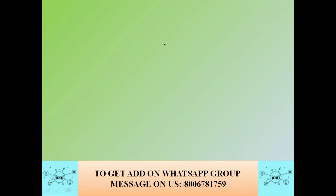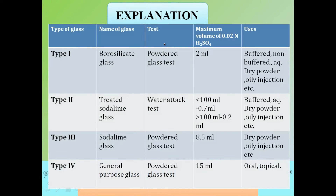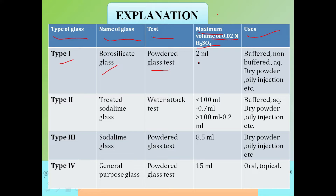Let's discuss using a table. Type 1 glass is borosilicate glass; its test is the powdered glass test; the volume of H₂SO₄ needed is 2 mL; and it is used for buffered, non-buffered aqueous, or oily injections. In 2018 a question from this topic appeared in exams.